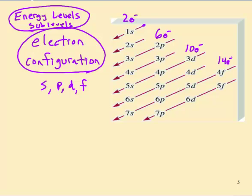Here's how this works. The first sublevel you come across would be the 1S. That is the sublevel that is closest to the nucleus. 1S, then the 2S, then the 2P, then the 3S. You can see I'm following along here, these arrows diagonally across the chart that I've made.